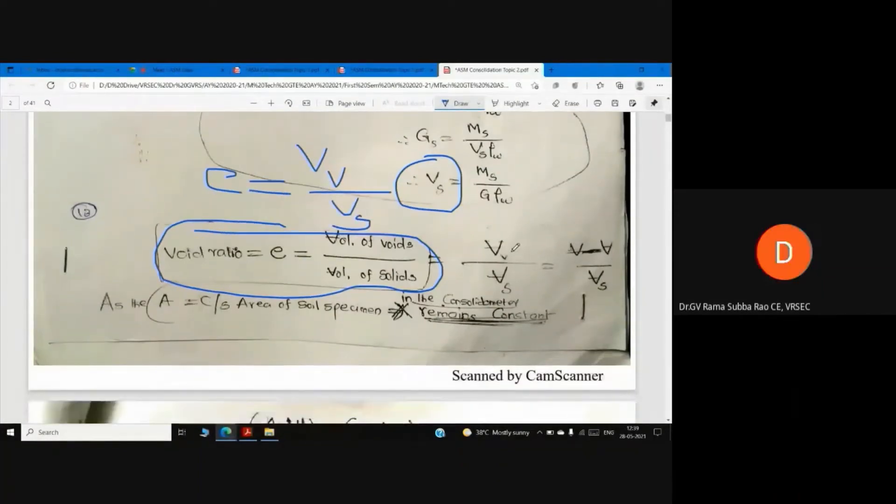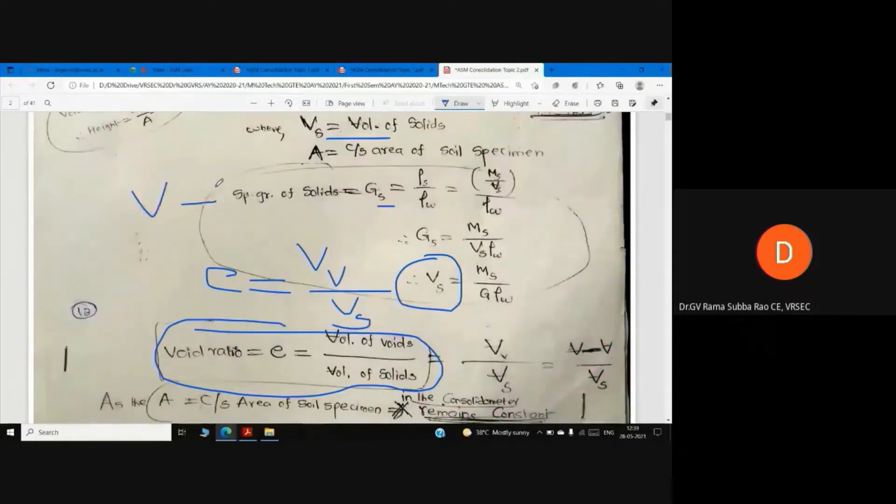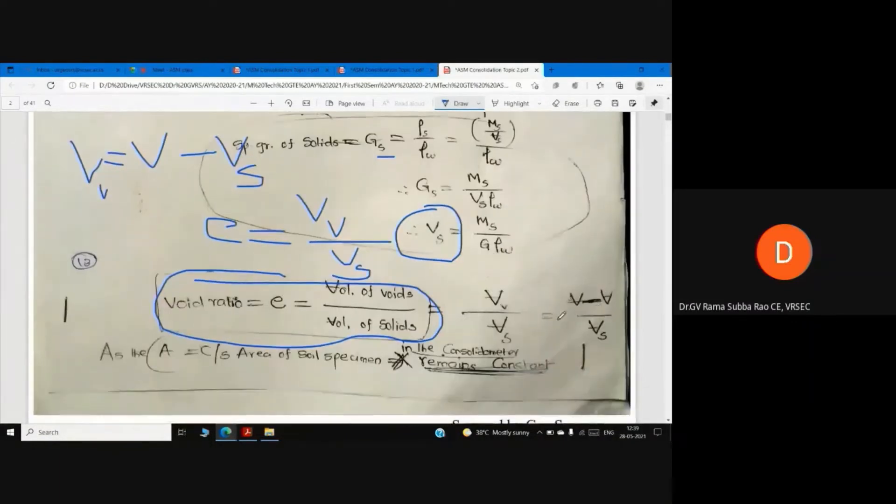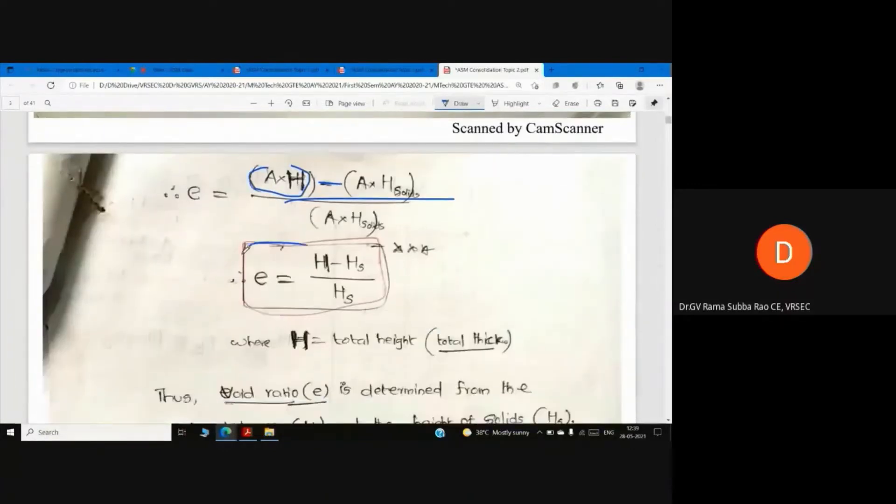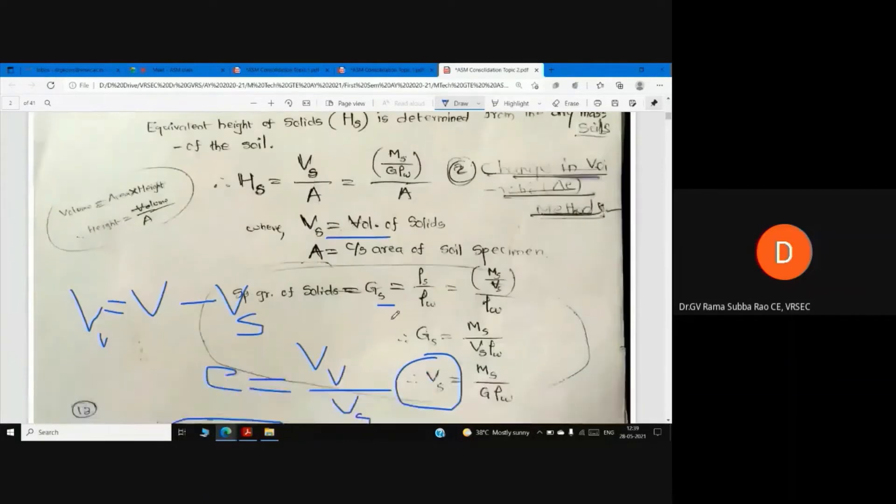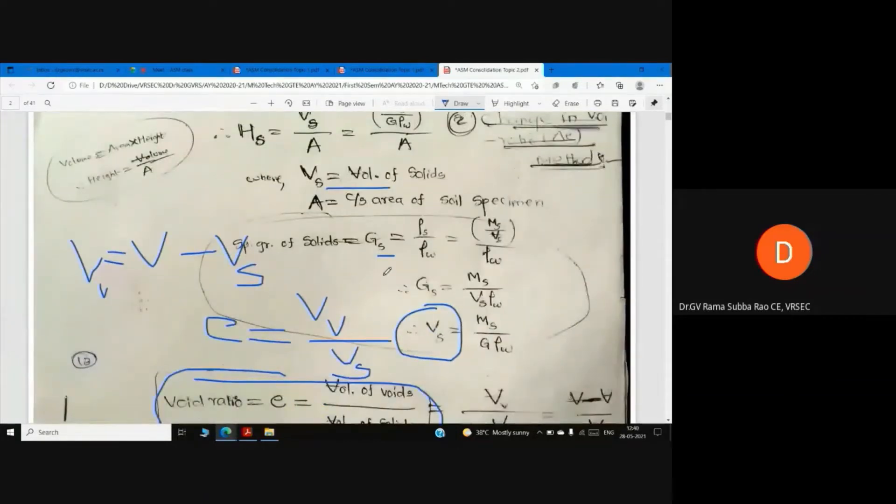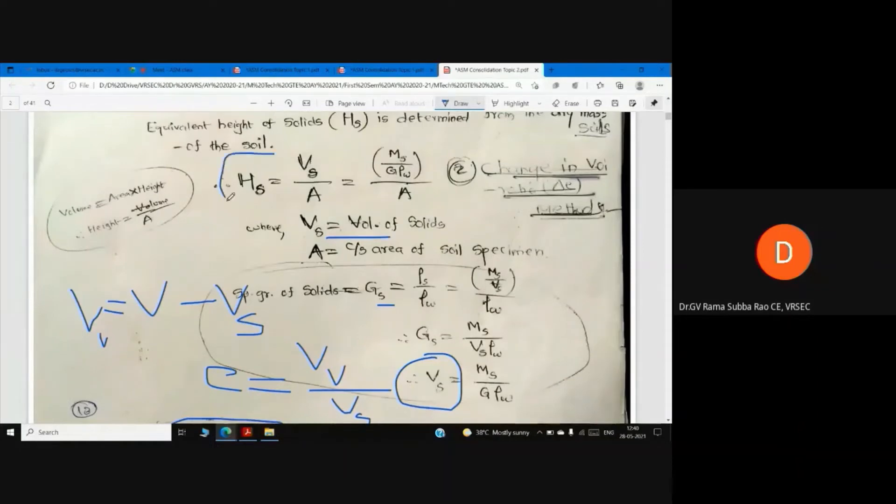Volume of voids plus volume of solids equals total volume. Volume of voids is equal to total volume minus volume of solids, calculated by area into H. E is equal to H minus Hs by Hs. Hs is equal to Ms by ρw into A - this is how to calculate Hs.